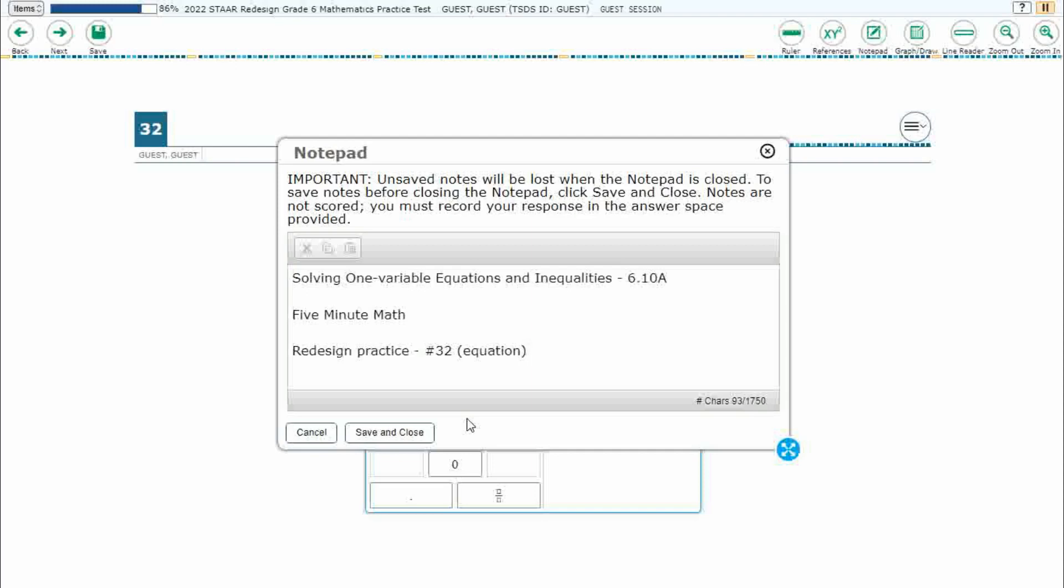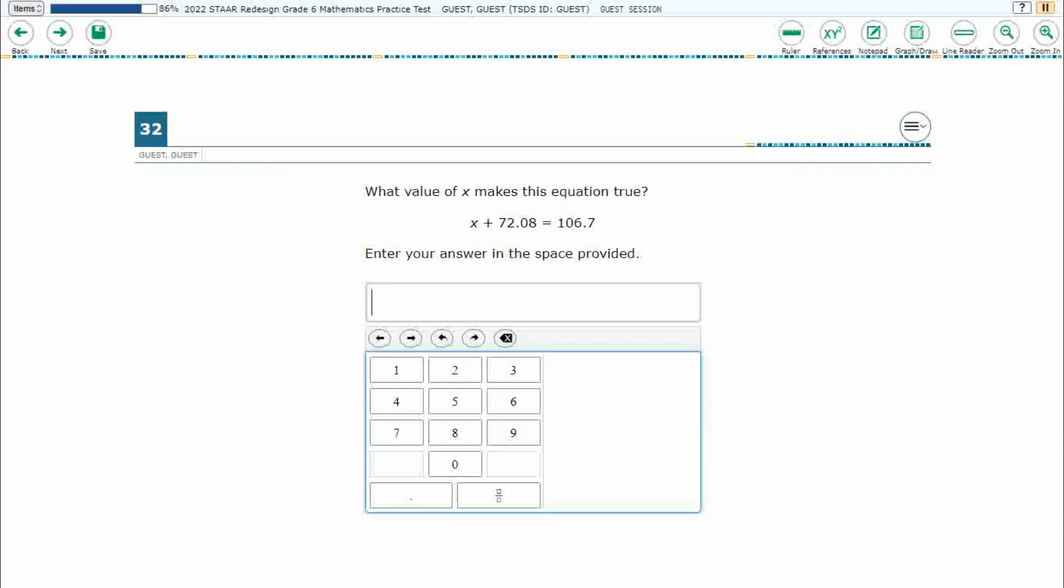and we are using item number 32, which is a new item type called Equation, off the Redesign Practice Online Star Test.